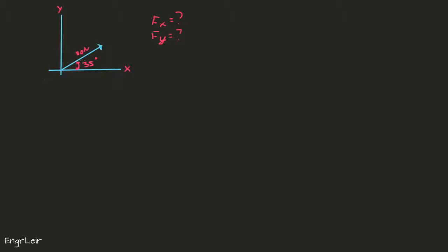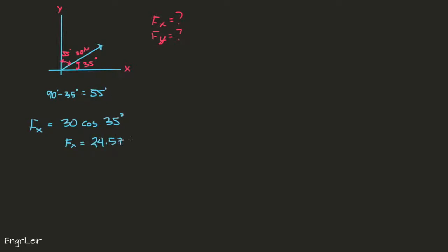Since the axes are perpendicular to each other, if one angle is 35 degrees, the other must be 90 minus 35, which equals 55 degrees. Now we can find the rectangular components. F sub x is equal to 30 cosine of 35 degrees, which is equal to 24.57 newtons.